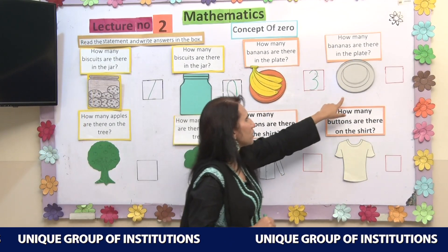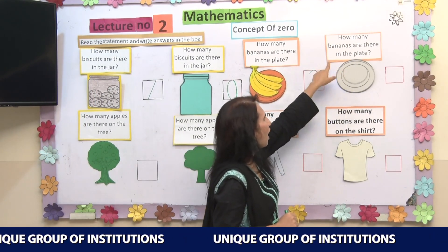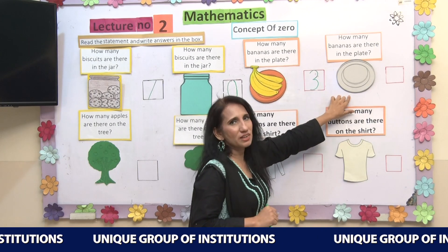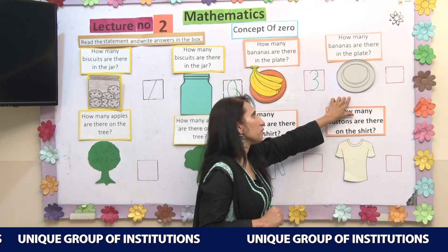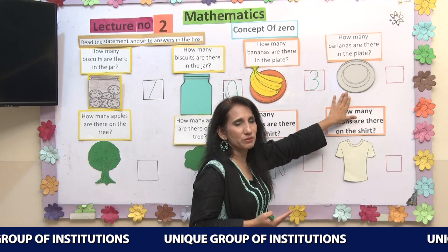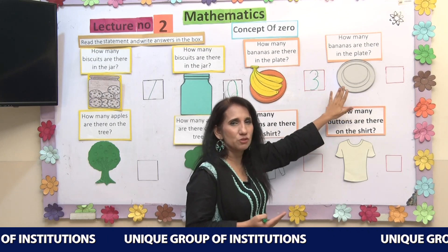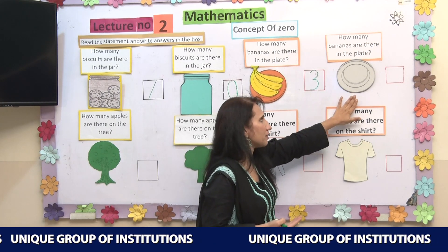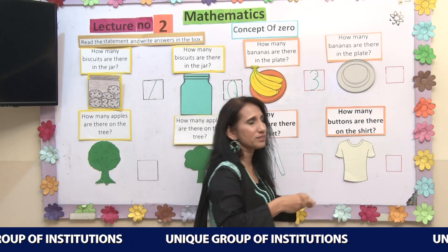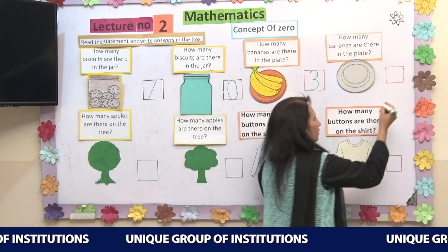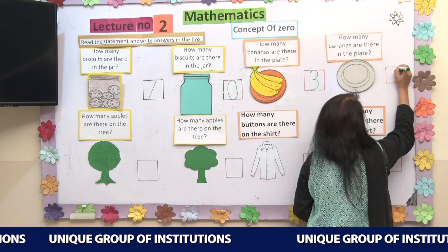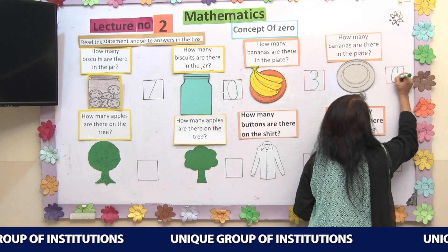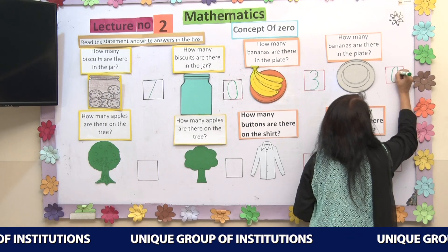Now, what is on this plate? How many bananas are there? I am unable to see any banana on this plate. There is nothing on the plate, which means I am going to write 0 in this box — there are 0 bananas.